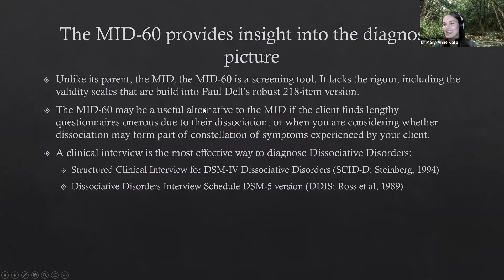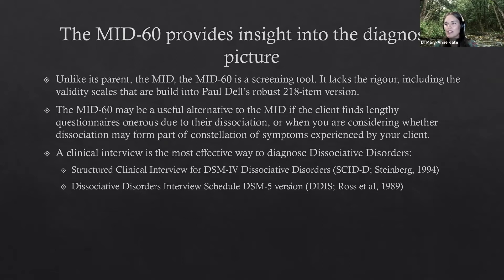The best way, as always, is through structured clinical interviews. Marlene Steinberg's SCID-D is considered the gold standard. Colin Ross's Dissociative Disorders Interview Schedule is also excellent and available open source. You might use the MID-60 where you're not particularly worried about dissociation but doing a screener to see if it's there. The full MID is better if you have specific concerns — but the MID-60 makes sense as an initial screen.